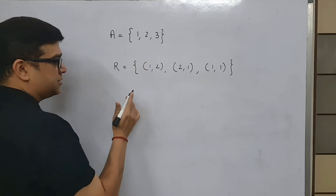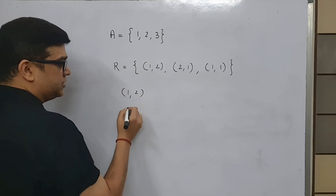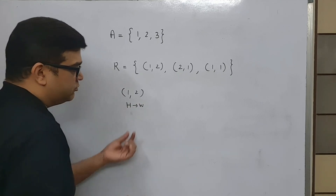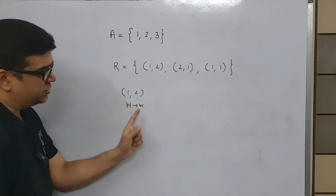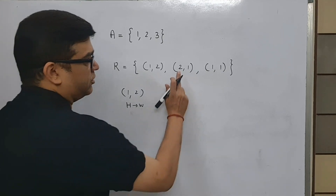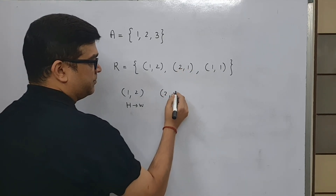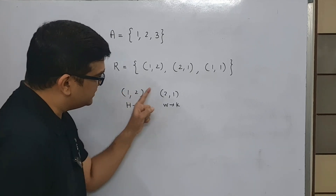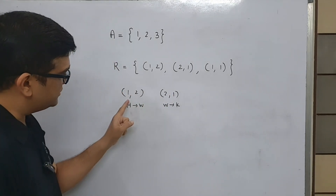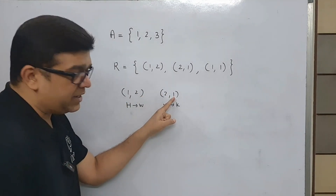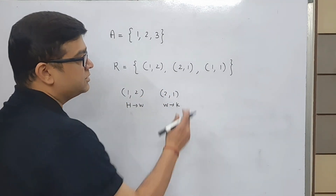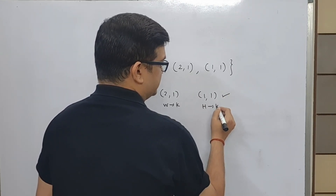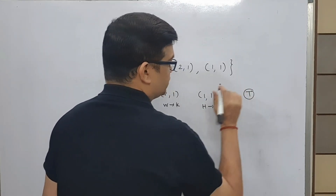So let us first pick up (1,2). This combination is like husband is related to wife. Now check whether wife has a kid or not — whether 2 is related to something. Yes, 2 is related to 1, so wife has a kid. Now check whether husband accepts the kid — whether (1,1) is present. Yes, (1,1) is also present, meaning husband accepts the kid. So this says this is transitive.